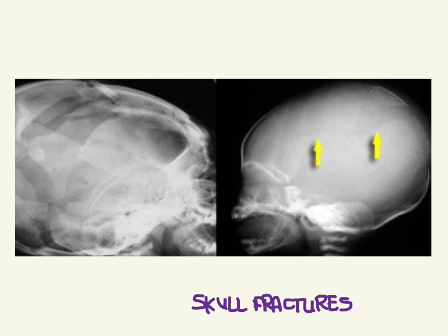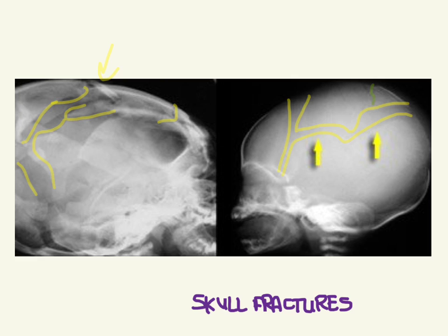Facial fractures crossing sutures are also concerning. This x-ray just is infuriating — look at all these fractures, this child's head is shattered. This is from a child who died after being thrown from a height. The other image is more subtle, but you can see fractures that are crossing suture lines, which are also indicative of abuse.